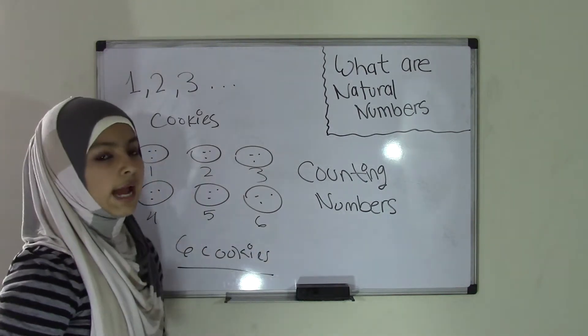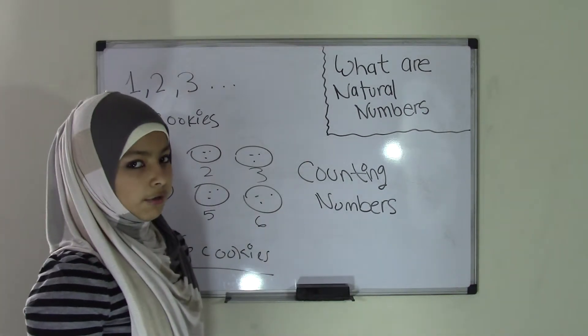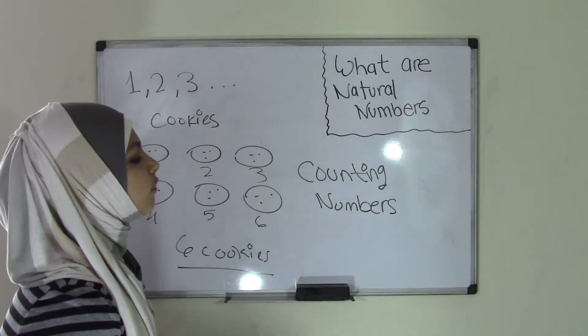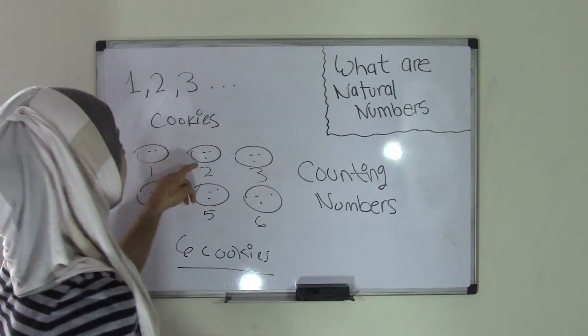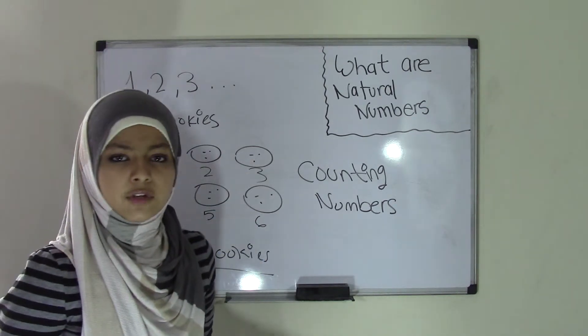However, the question to be asked here is, well, we know that 0 is still a number, right? Why can't we just start counting from 0 and go 0, 1, 2, 3, 4, 5, and have a total of 5 cookies?